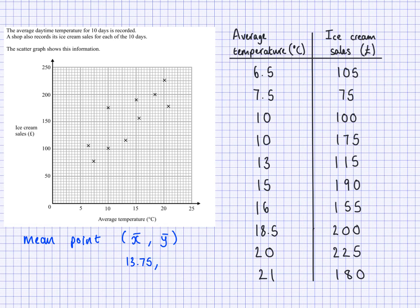I've also done it for these values. I added them all up and I divided by 10 and that gave me 152. So that is my mean point, and I can plot this here — I can find that on my grid and then just plot it.